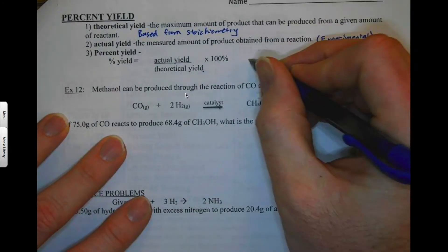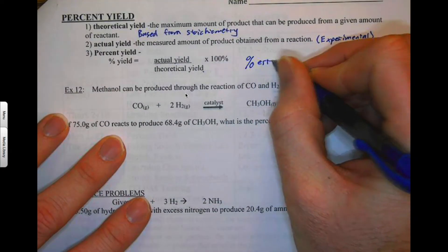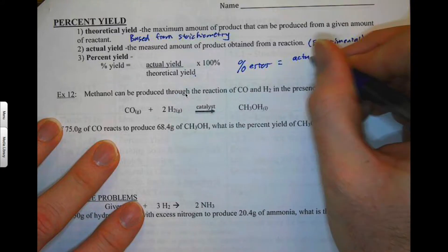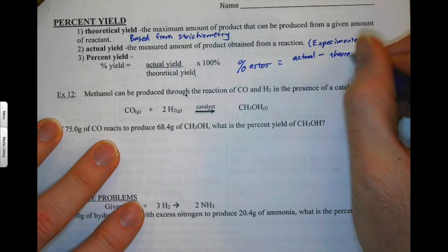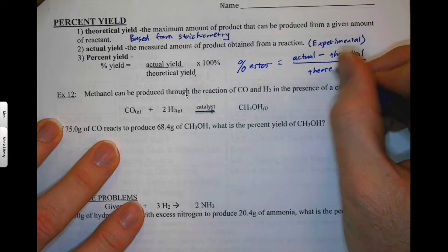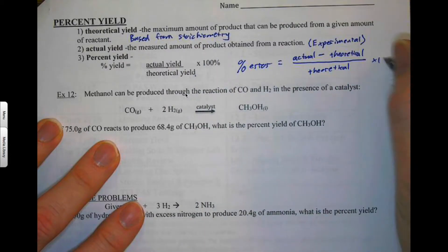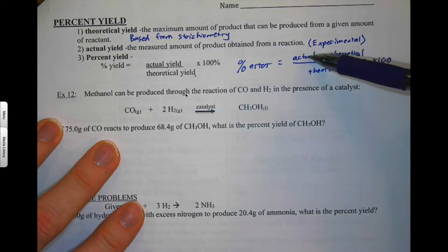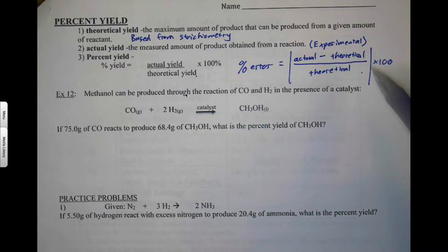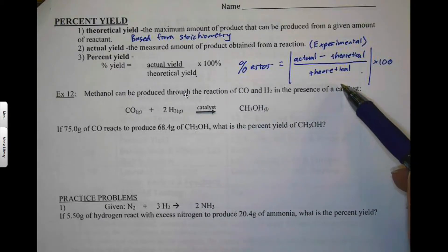Now there's another one that you may see, and that's percent error. Percent error is going to be the actual minus the theoretical over the theoretical times 100. Now if your actual yield is less than the theoretical, then you will end up with a negative. So we don't like negatives, so we'll take the absolute value of it. If you don't know what an absolute value is, that just means that if the number is negative, you'd make it positive. If it is already positive, you keep it positive. That's all it is.